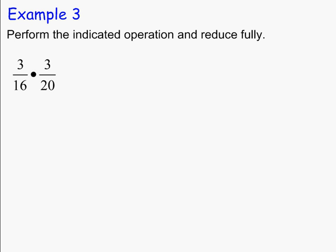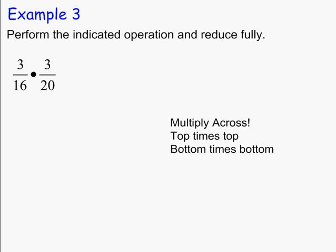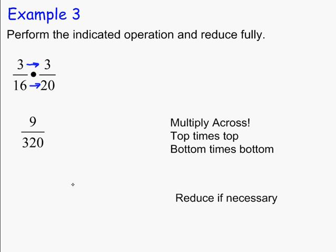Example 3: perform the indicated operation and reduce fully. Here we are multiplying. When you multiply fractions, you multiply across — top times top and bottom times bottom. You are not cross multiplying here; cross multiplying is for when you have an equal sign between the fractions. So top times top, bottom times bottom: 3 times 3 is 9, and 16 times 20 is 320. Reduce if necessary, but 9 over 320 is already in simplest form.